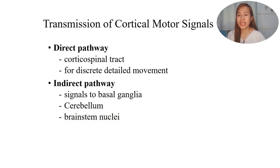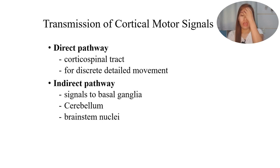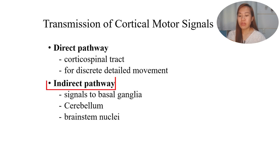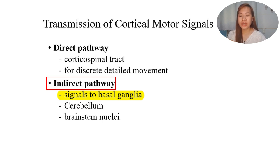How are these signals transmitted from the cortex? There are two pathways for transmission of cortical motor signals: a direct pathway and an indirect pathway. The direct pathway involves the corticospinal tract and is for discrete and detailed movement. The indirect pathway sends signals first to the basal ganglia - if you remember, that was the pink line going to the basal ganglia. There is also an indirect pathway going to the cerebellum and to the brainstem nuclei.